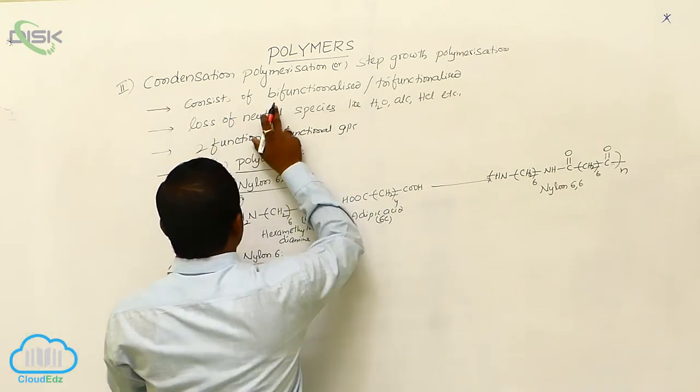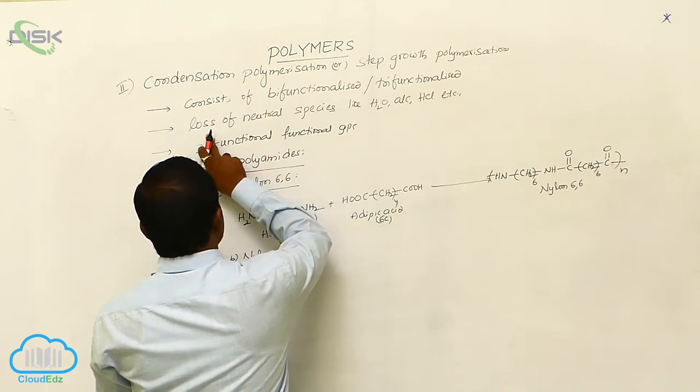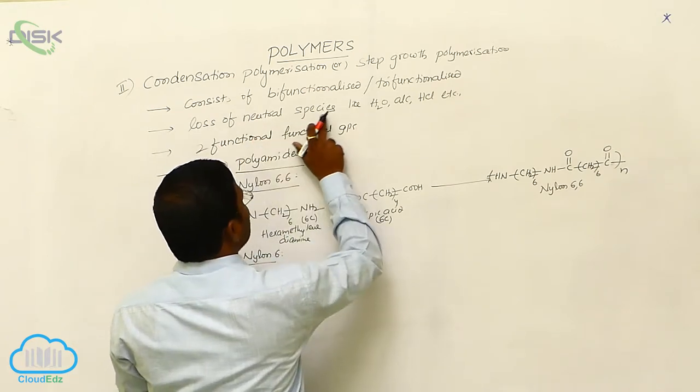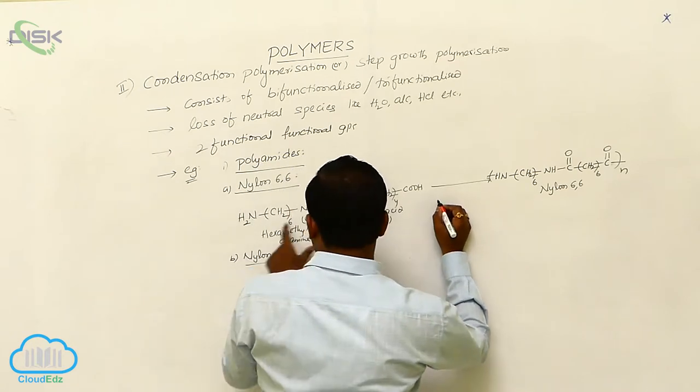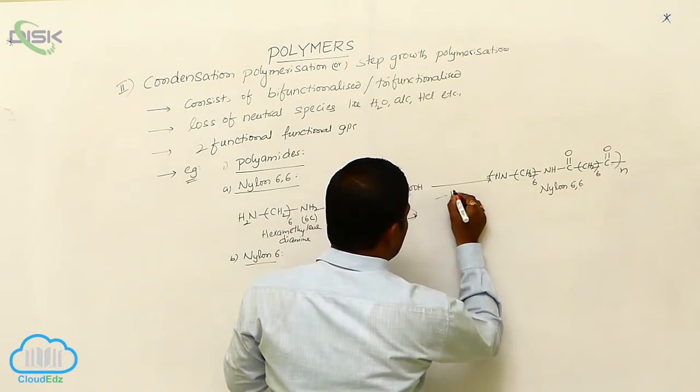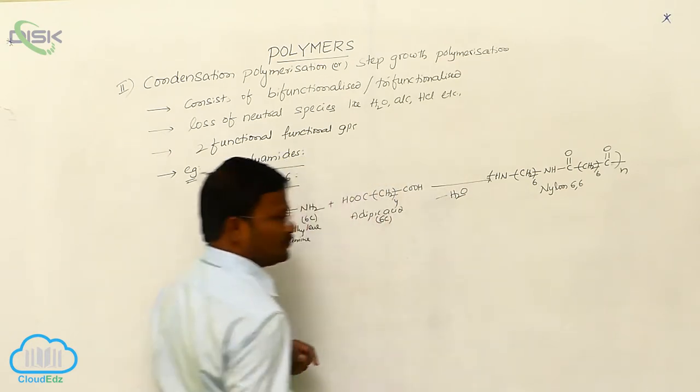Here, as per our second statement, loss of neutral species during the polymerization, loss of water molecule is expected. Similarly, let us learn nylon 6.